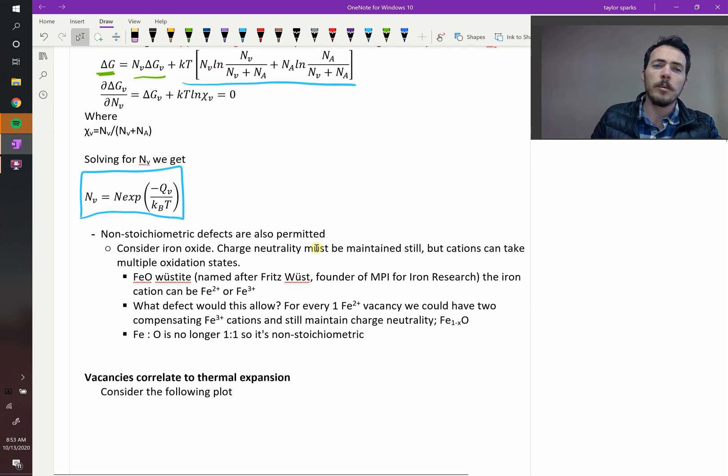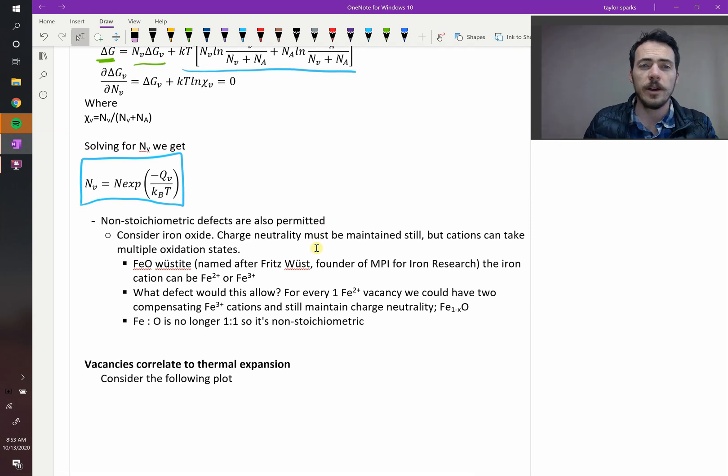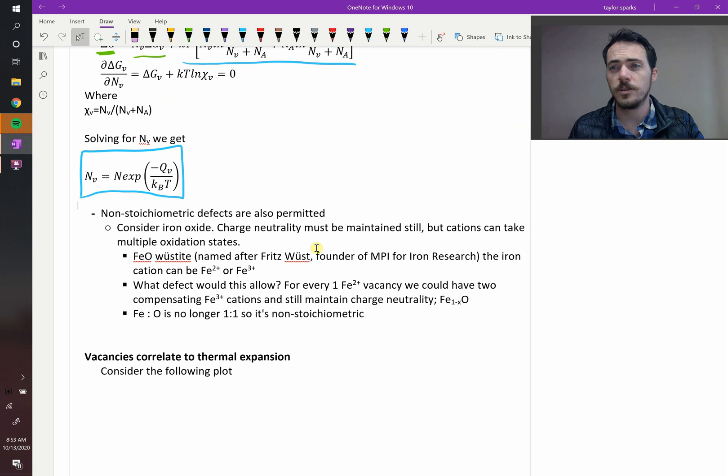Now, remember, some compounds also allow you to have non-stoichiometric compositions. Non-stoichiometric defects can also be permitted. A great example of this is iron oxide. So in all these cases, you have to have charge neutrality maintained. So however much positive charge, you have to have just as much negative charge, or it won't be charge neutral.